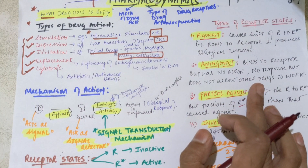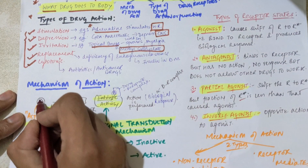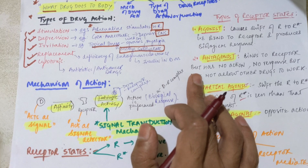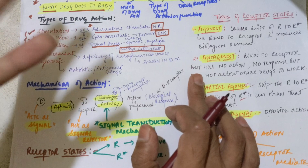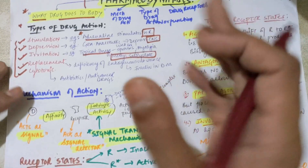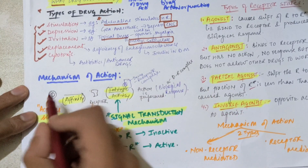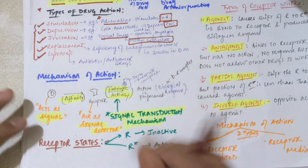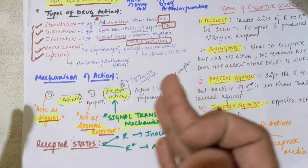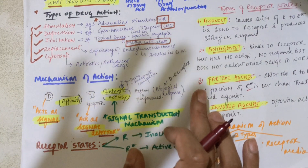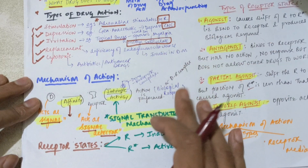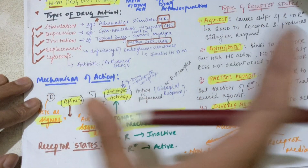Now we have to see the mechanism of action — how the drug actually works. Consider D is your drug and R is your receptor. The drug will only work if it combines with the receptor; the drug has the ability to work only after forming a drug-receptor complex. If the drug is not able to bind to the receptor, it will not perform its action, and you will not get any biological response or pharmacological effect. The drug acts as a signal and the receptor acts as a signal detector. Affinity is the capacity of the drug to bind to the receptor — this process of drug-receptor interaction is called affinity.